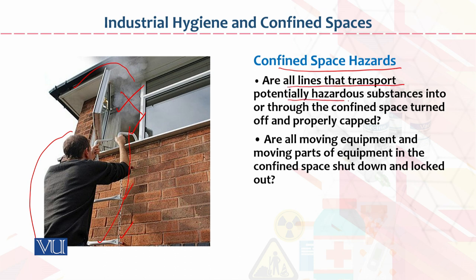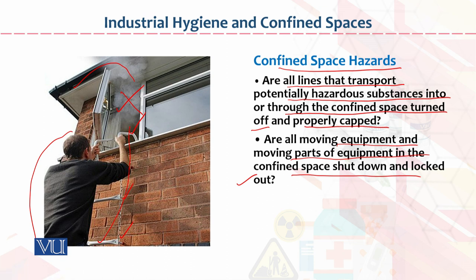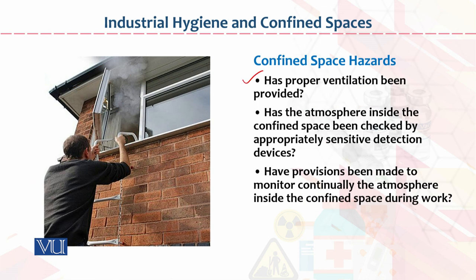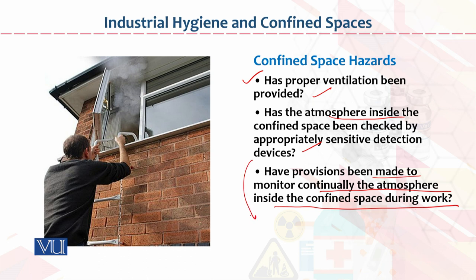Confined space hazards ko hum yahan dekhte hain: Are all lines that transport potentially hazardous substances into or through the confined space turned off and properly capped? Are all moving equipment and moving parts of equipment in the confined space shut down and locked out properly or not? Has proper ventilation been provided? Have provisions been made to monitor continually the atmosphere inside the confined space during work or not? Agar yeh tamam chizein available hain, toh is ka matlab hai ke industrial hygiene and confined spaces ke concepts ko woh organization follow kar rahi hai.